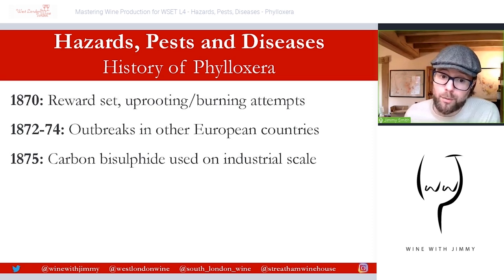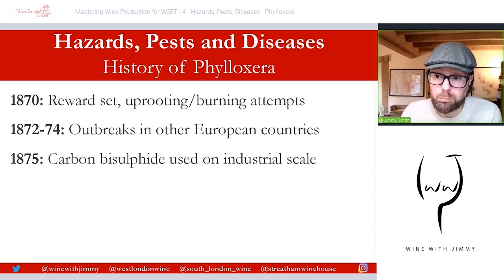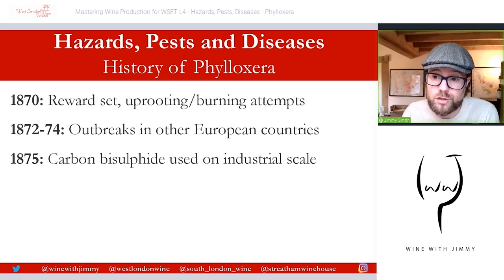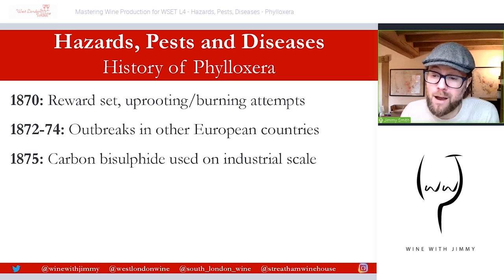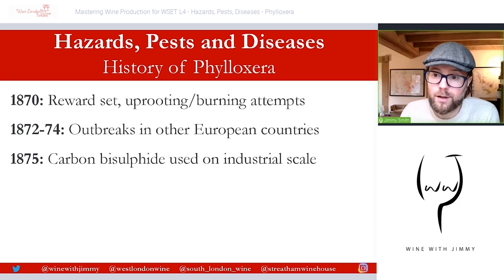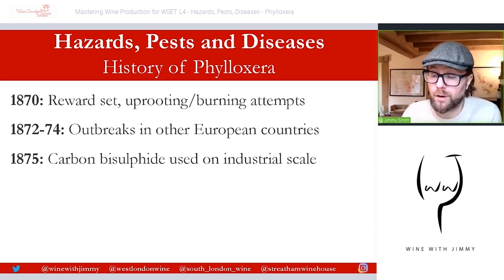Carbon bisulfide — the original approach of trying to destroy phylloxera — was used on a much greater industrial scale as a quick short-term fix, but it wasn't hugely successful. Within France at this time two groups emerged: the sulfurists, those who believed in the chemical cure for phylloxera, and the Americanists, those who believed that American vines, though likely the culprit, were also likely to be the saviour. This caused a lot of lobbying between the two groups.